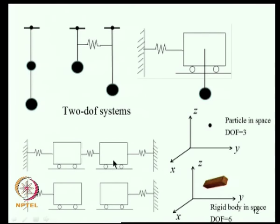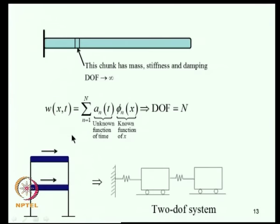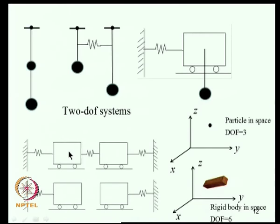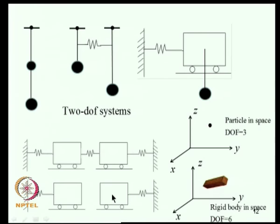Two masses on springs form a 2-degree-of-freedom system where at any time T we need the position of both masses. Another 2-DOF system also requires knowing where both masses are. A key difference is that in one system the displacements are coupled, while in another the oscillators are uncoupled - but both are 2-degree-of-freedom systems.